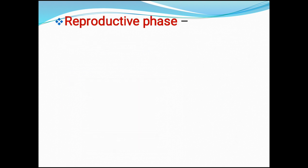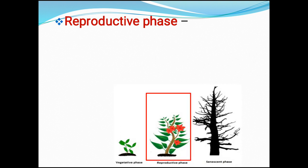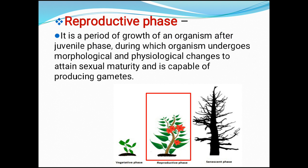The second phase of life is the reproductive phase. Reproductive phase is the period of growth of an organism after the juvenile phase, during which the organism undergoes morphological and physiological changes to attain sexual maturity and is now capable of producing gametes.